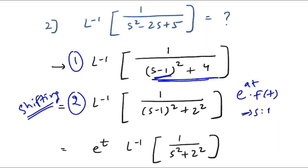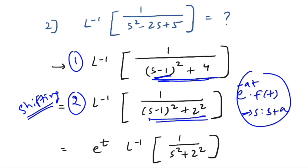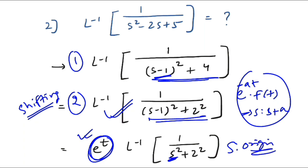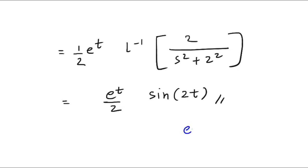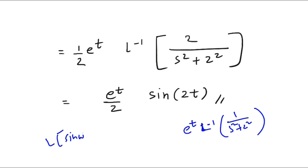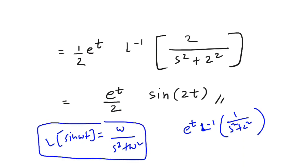We need this format because of the shifting property. In the Laplace transform, whenever e^(at) is multiplied to a time domain function, the position of s shifts to s−a; if it is e^(−at), s shifts to s+a. So here in Laplace inverse of 1/[(s−1)²+2²], the position of s is shifted at s−1, meaning there is an exponential term e^(+t) outside.